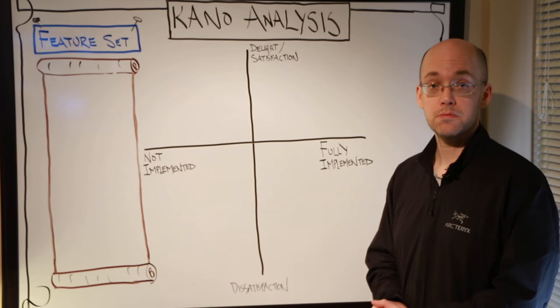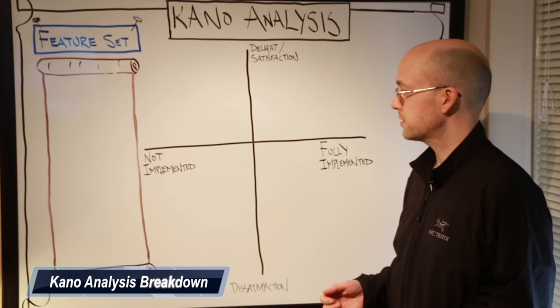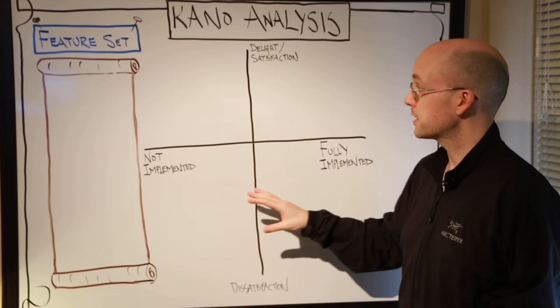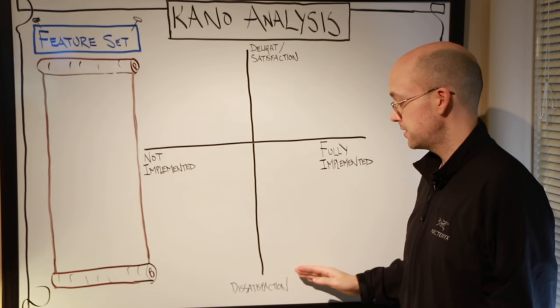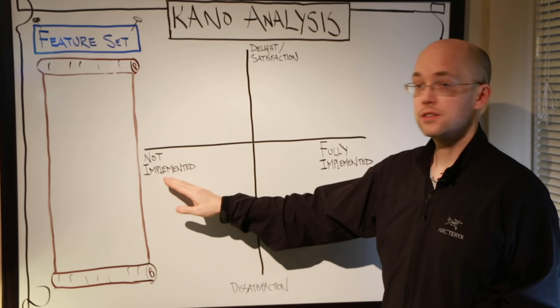The analysis is broken down as follows. We will map our product features into this diagram, so I've created a couple axes here. This axis, as I was mentioning, is our satisfaction level from being very satisfied to not being satisfied, and the other axis is if we decide to not implement the feature versus fully implementing the feature.